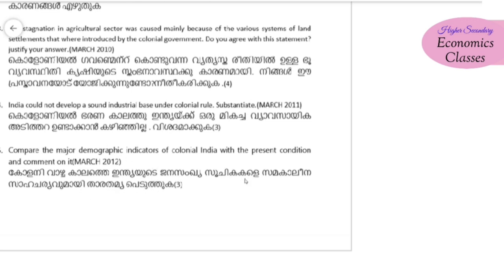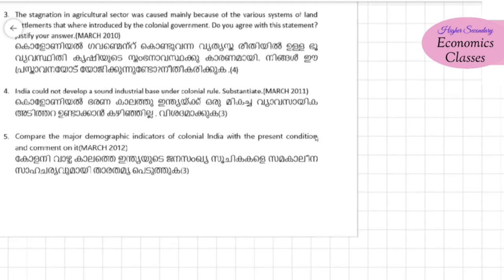In this case, the people in India are the same. There is a table in our chapter. This is British period — the people, the sex ratio, and a comparison. Now we are going to compare with British period. That is Demographic Transition Theory. Demographic Indicators of Colonial India with the Present Condition.